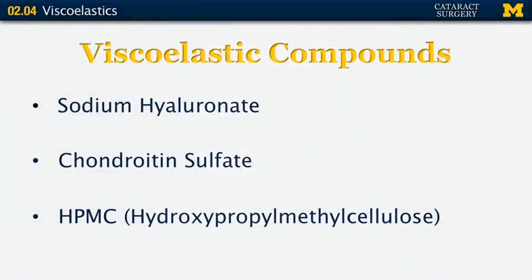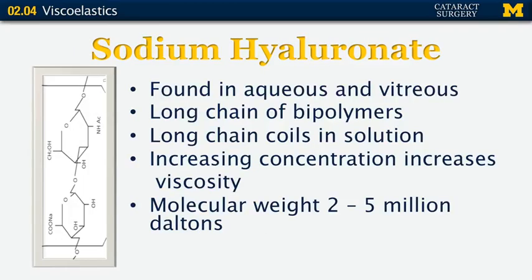All viscoelastic compounds are made of three basic substances: sodium hyaluronate, chondroitin sulfate, and hydroxymethylpropyl cellulose. Sodium hyaluronate is a biopolymer that's ubiquitous throughout the body. Chondroitin sulfate is found naturally in the cornea. HPMC is actually a plant material — it's cellulose in plant fibers and is not naturally found in human beings.